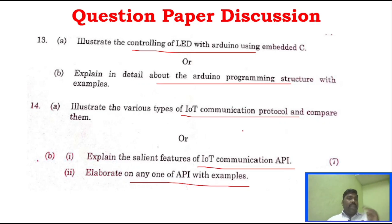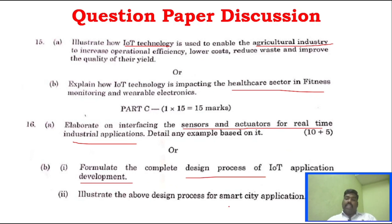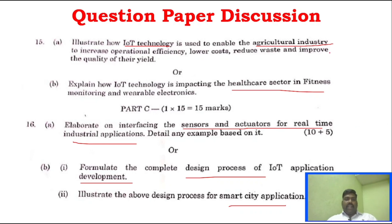Unit 4 is very very important because you will not be able to predict the questions easily. Unit 5 — 95% of the Part C questions come from Unit 5. If you have questions in Unit 5, Part B is 15 marks and Part C is 12 marks — that is 27 marks in your hand.